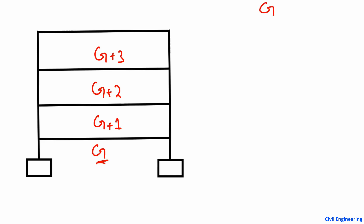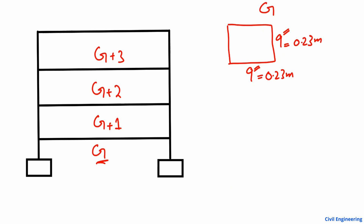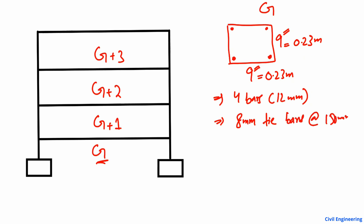For the ground floor, the minimum cross-section of the column should be 9 inches by 9 inches, or 0.23 meters by 0.23 meters. There should be at least four main bars of 12 millimeter diameter. The stirrups or ties should be 8 millimeter tie bars at a 150 millimeter center-to-center spacing. This is the minimum column size for the ground floor.